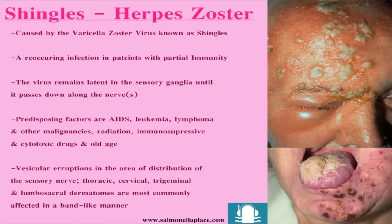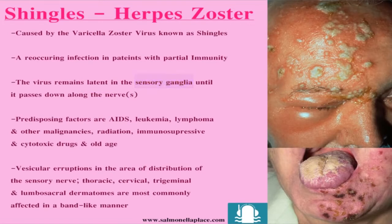The virus remains latent — that means it remains in the body but in an inactive form — in the sensory ganglia. That is how the secondary infection comes to pass, and when it is time to reinfect the patient, it passes down along the nerves.